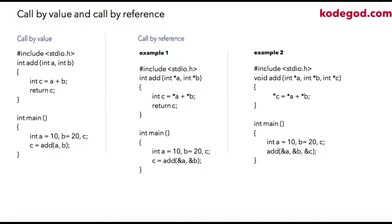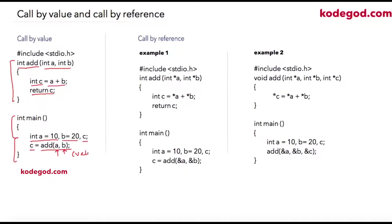In this lecture we are going to learn about calling a function by passing value or reference. We will first take call by value. In this example I am defining a function called add, to which I am passing two integers and it will return an integer. I am declaring another variable int c and storing the addition of a and b into it, then returning c. Inside main, I am initializing a to 10 and b to 20, declaring one more variable c, and storing the value returned by my function add. So 10 and 20 will be passed to the function add, those values will be added and stored into c, and this c will be returned.